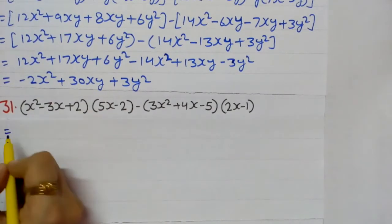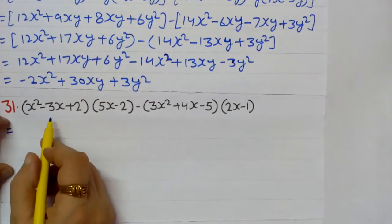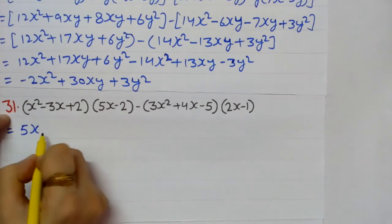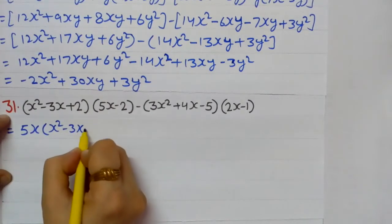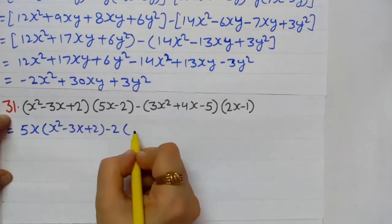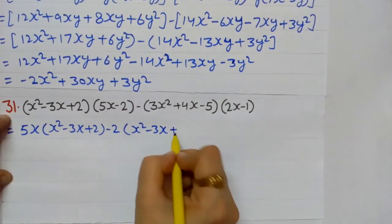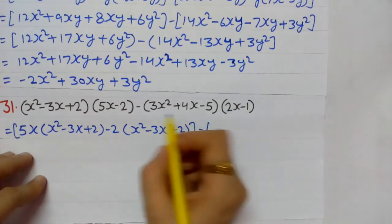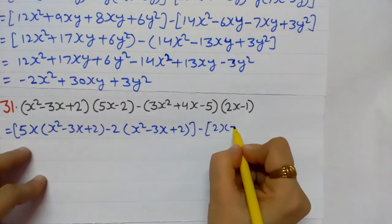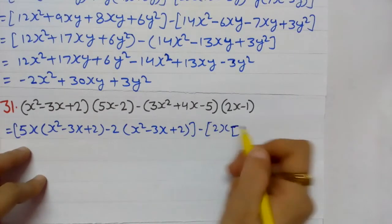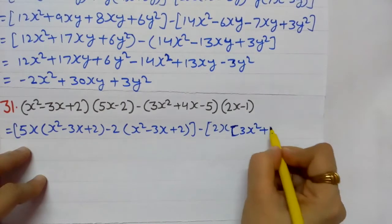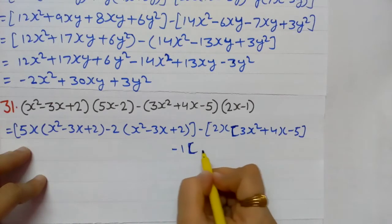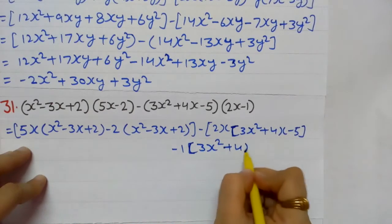Students, we can break any bracket and multiply with any other. So I break the second bracket first: 5x multiplied by the first bracket (x² − 3x + 2), minus 2 multiplied by the first bracket (x² − 3x + 2). Here also, I break the second bracket: 2x multiplied by the first bracket (3x² + 4x − 5), then minus 1 multiplied by the first bracket (3x² + 4x − 5), all taken in a whole bracket.